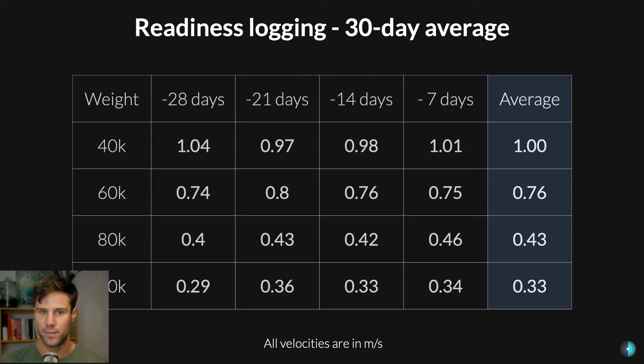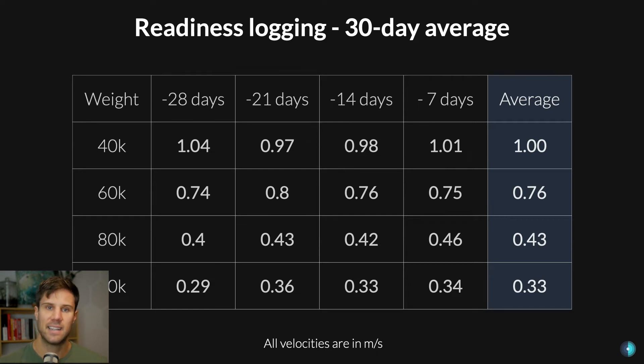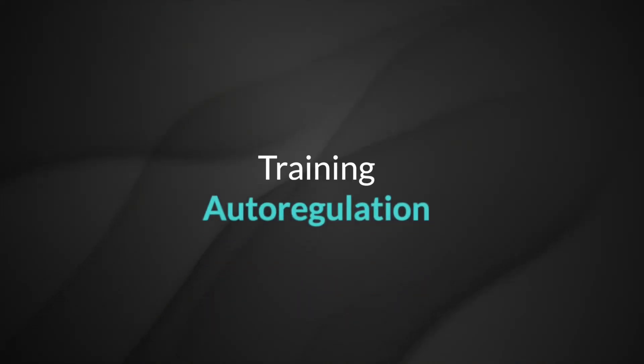Instead, what we want to do is smooth out the data and get a rolling idea of where we're at, smoothing out those highs and lows to give us a better measuring stick. What I like to do for that is use a 30-day average. I take today's velocities and compare them to four or maybe five sessions worth of that same exercise to get an average picture of what I've been like in the last month. Ideally, you should be able to lift faster at each of those weights than you have on average over your last 30 days.